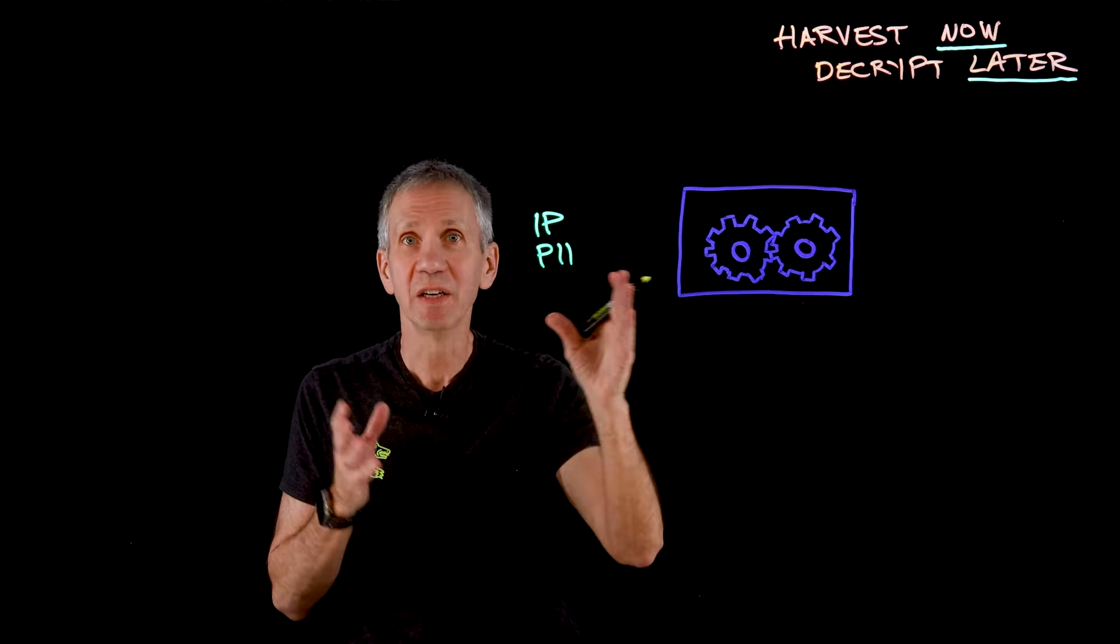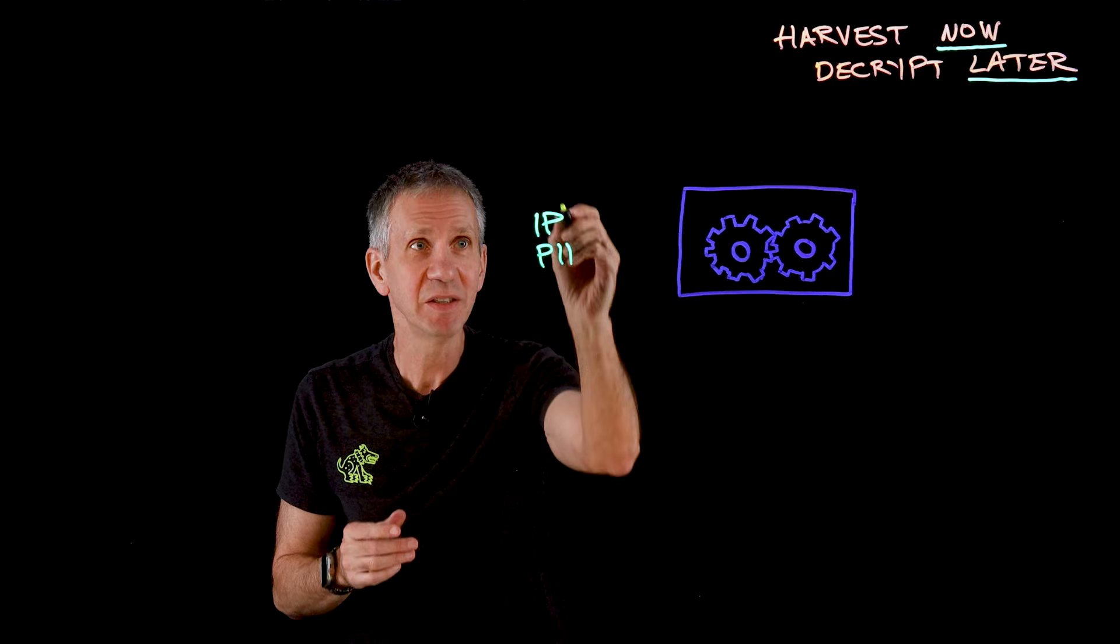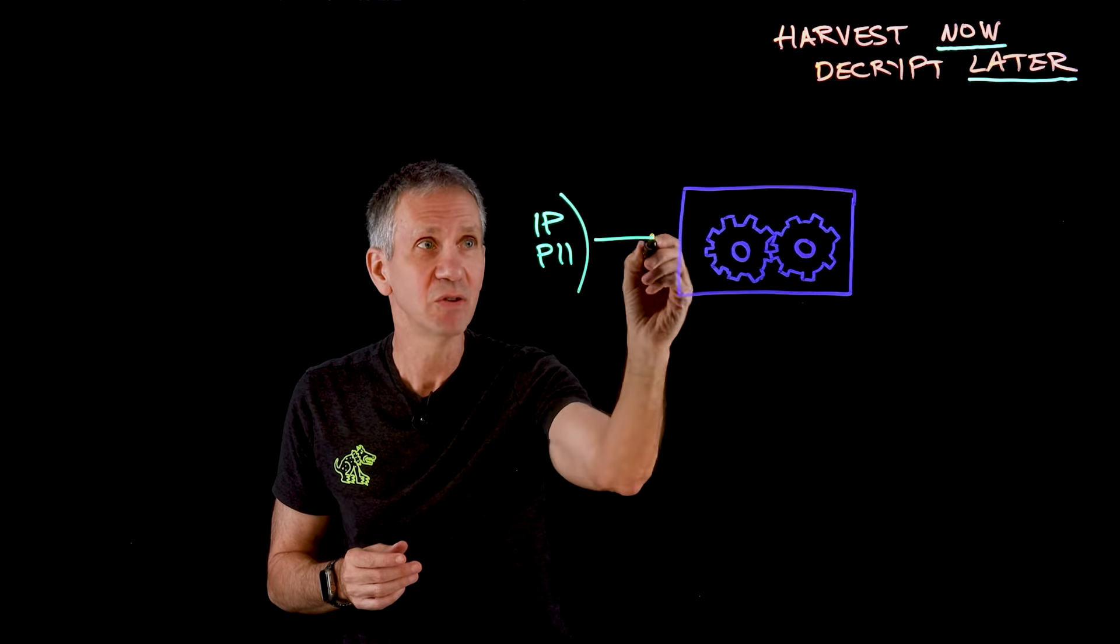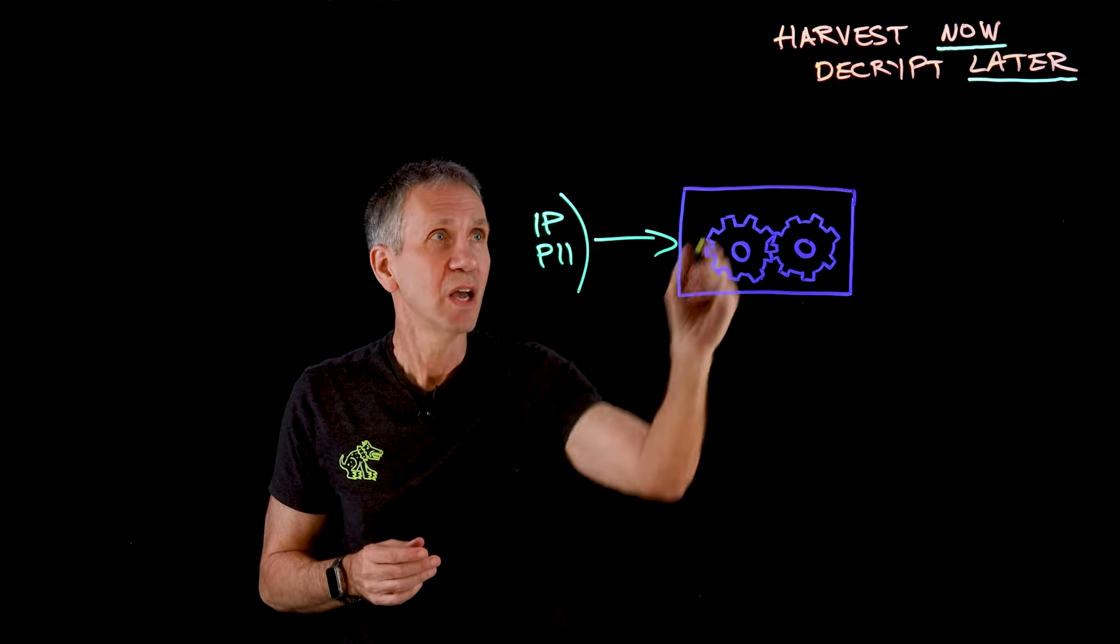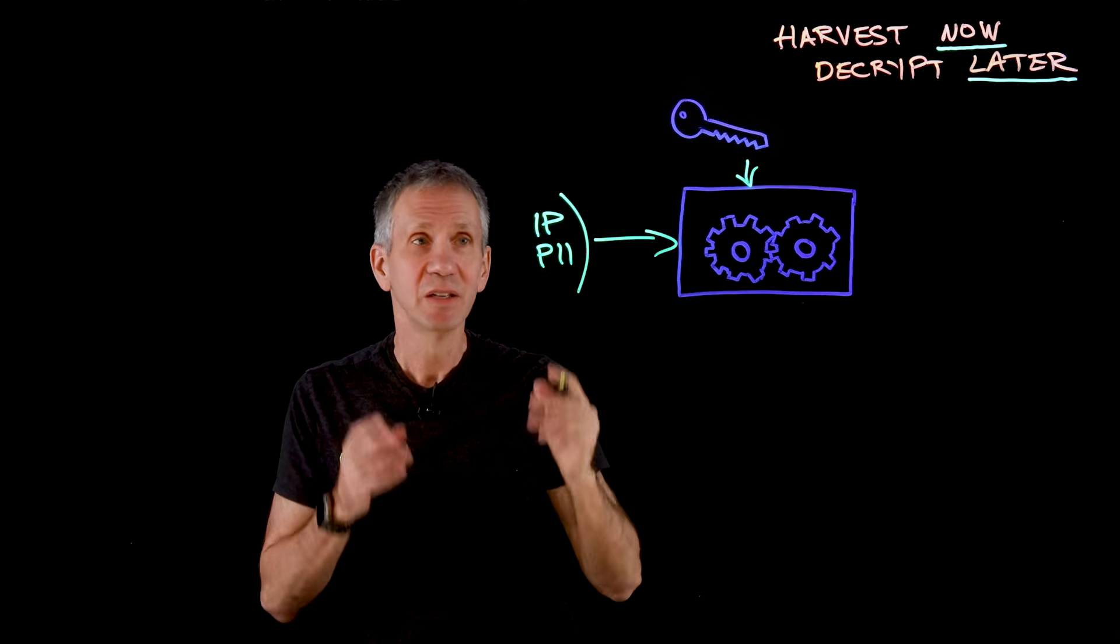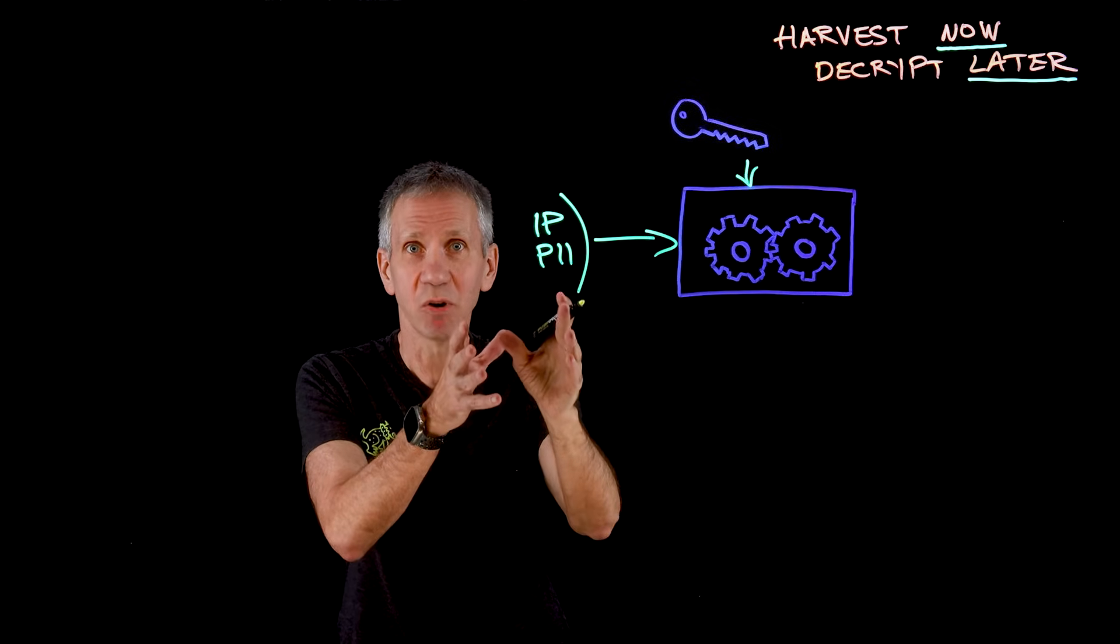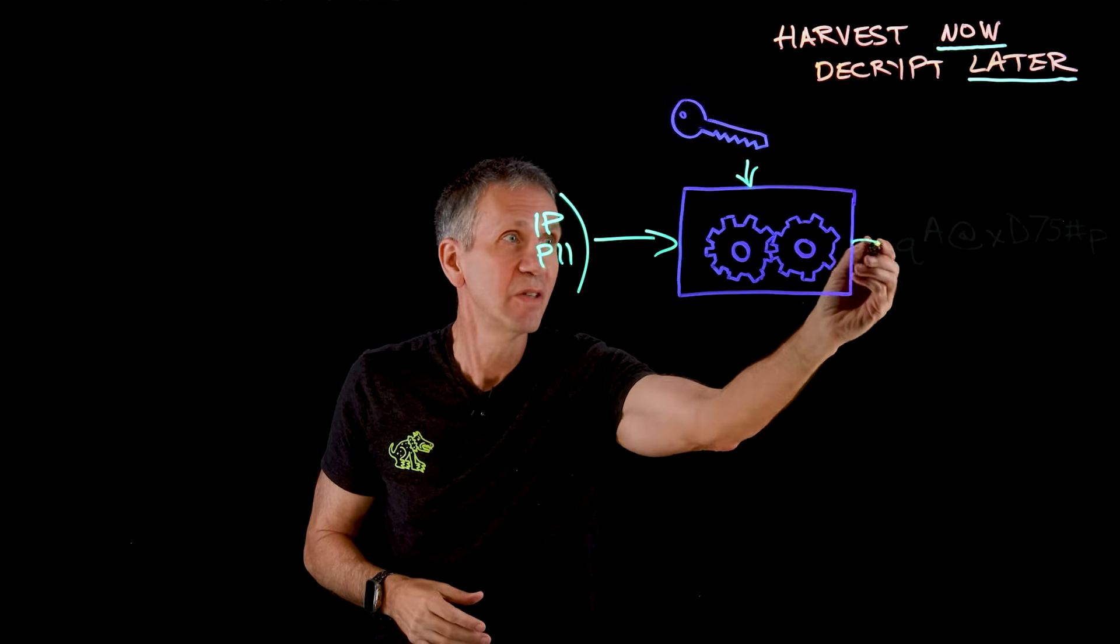Only those with a need to know should have access. So we use cryptography to protect these secrets. Plain text like this goes into a crypto algorithm, and we use a randomly generated key to turn plain text that's readable into cipher text that is not.